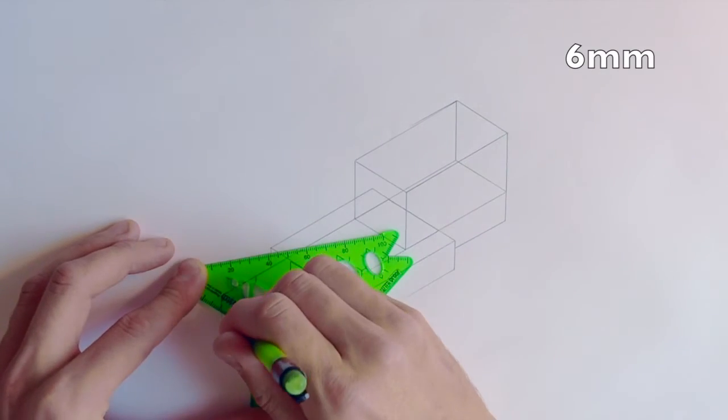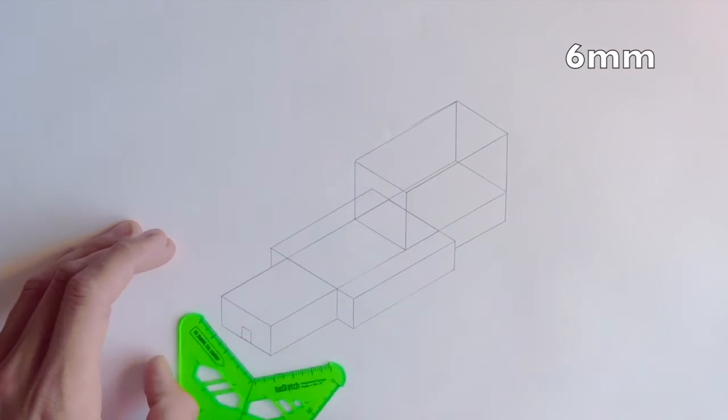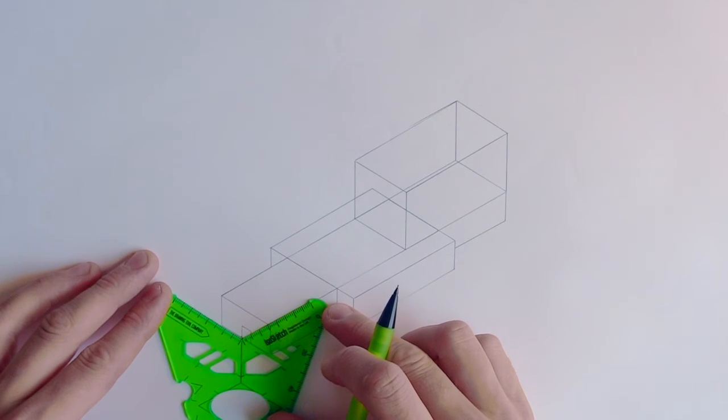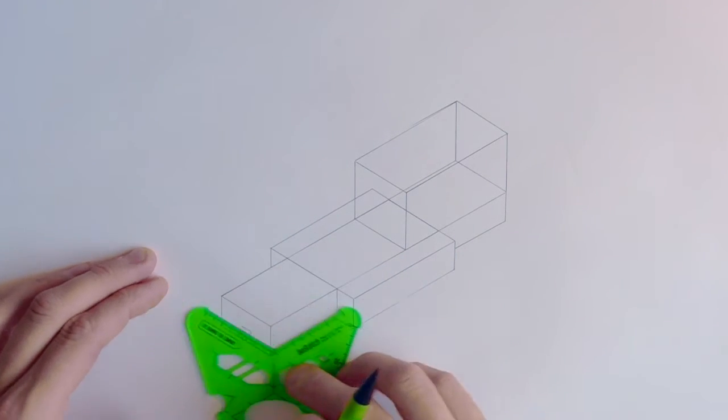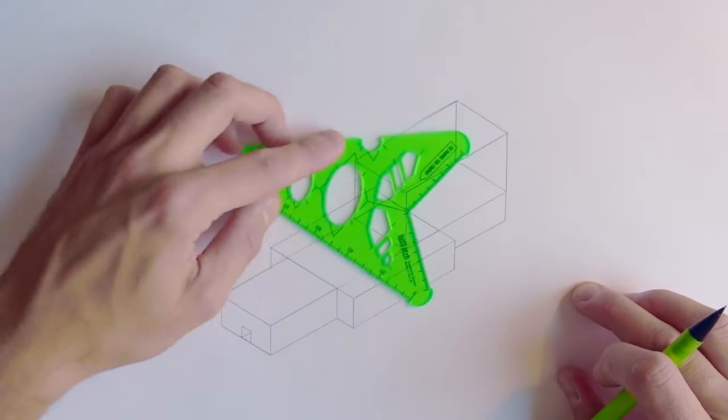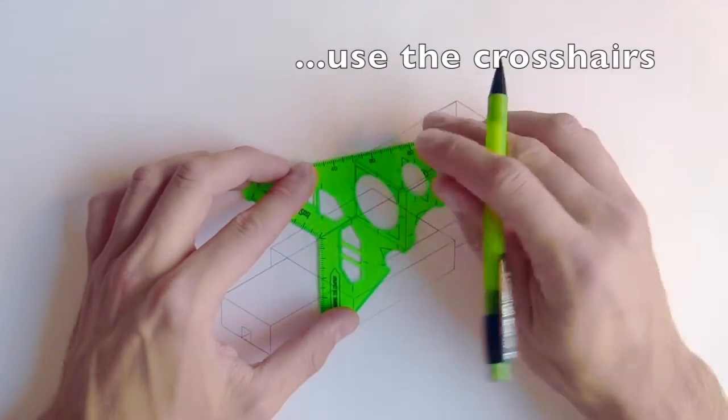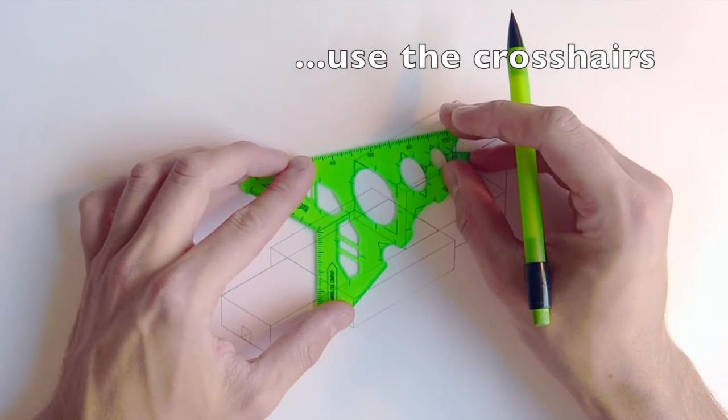This will give us the slot which runs underneath your car which becomes the Tether Line Guide which for those of you that have not done Formula 1 in schools before is what stops your car flying off the track. It's essentially a bit of fishing line that stops your car from shooting off sideways when the CO2 canister is punctured.